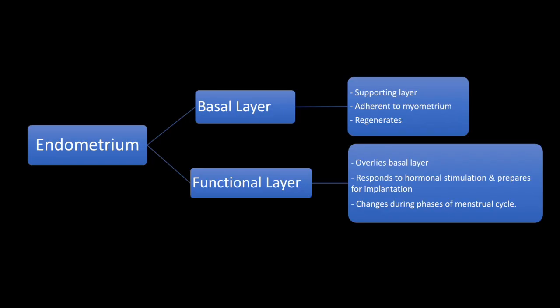The layers of the endometrium are the basal layer and the functional layer. The basal layer is adherent to the myometrium — it is the supporting layer that helps regeneration. The functional layer overlies the basal layer and responds to hormonal stimulation. This is the layer which undergoes changes during the various phases of the menstrual cycle, prepares for implantation, and is shed during the menstrual phase.